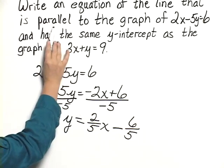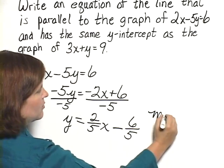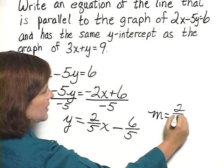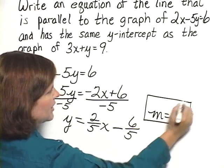Now we're interested here in the slope of this line. The slope of this line is 2 fifths, so I know that the slope of the line I'm looking for will also be 2 fifths. That's the first piece of information I need.